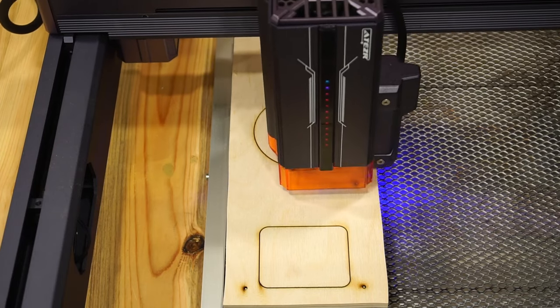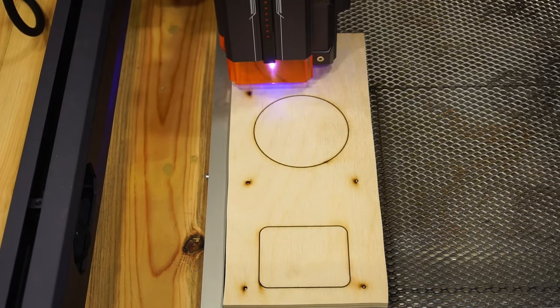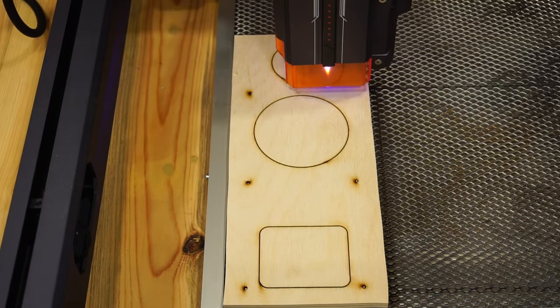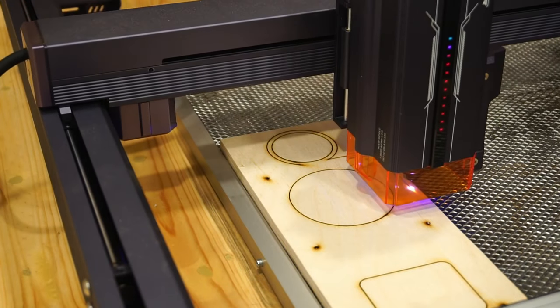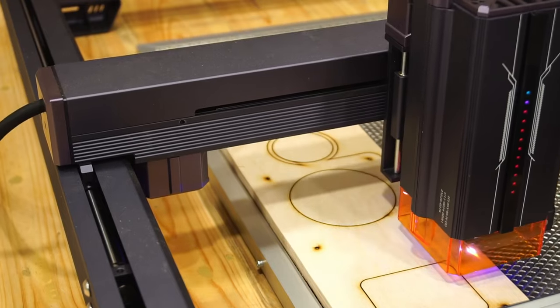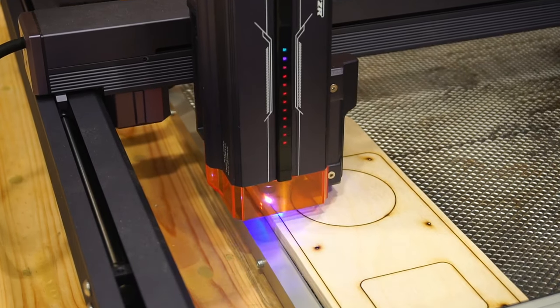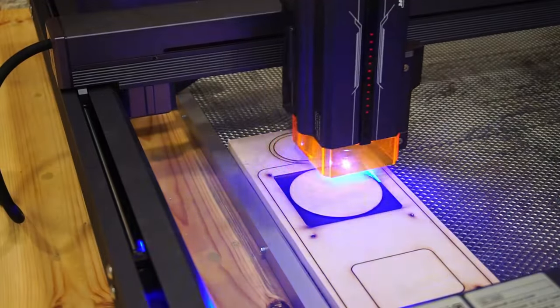To make it, I use 10mm birch plywood, which has very good acoustic properties. I use a laser engraver Atezer L236W to cut the individual elements to assemble the speakers. All elements are drawn on a computer program and cut with a laser.